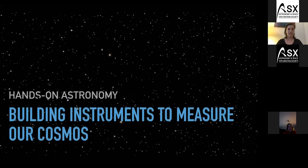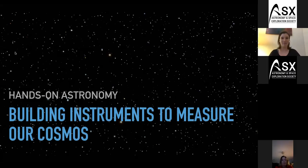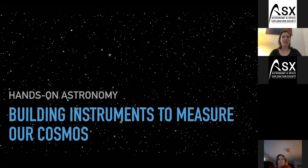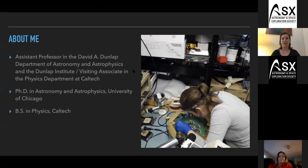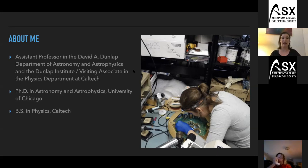Thank you so much — I have a cat tail as part of my welcome! I really appreciate you all inviting me to give this talk. I'm going to share my slides. I'm going to be talking to you today about building instruments to measure our cosmos. I got my PhD in astronomy and astrophysics from the University of Chicago, and my bachelor's in physics at Caltech. I'm also a visiting associate in the physics department at Caltech, where we do part of our research.